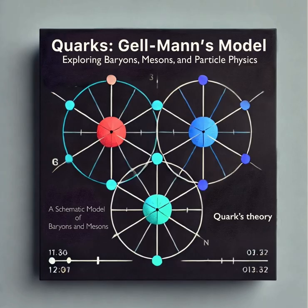He proposed that baryons, like protons and neutrons, are made of three quarks. Three quarks for a proton. Got it. And then mesons, they're made of a quark and an antiquark pair. So different combos of quarks, like a recipe, create different particles. I'm starting to see the picture.